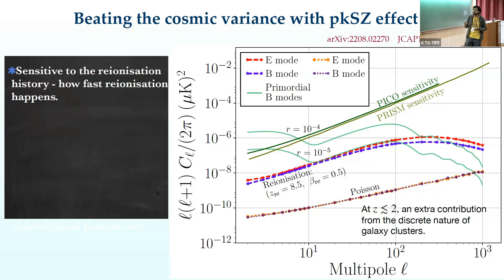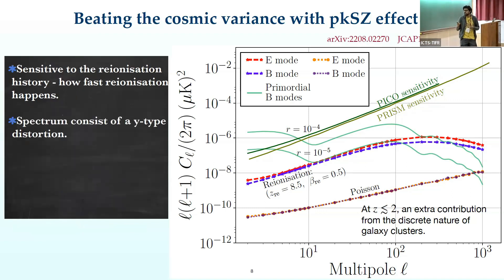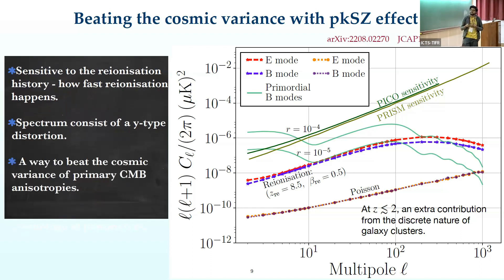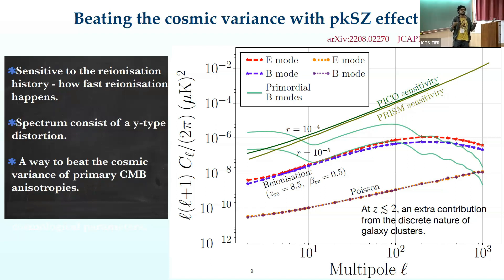A few key points: this power spectrum is sensitive to the reionization history, and in particular how fast reionization happens. It has a y-type distortion, which means it can be differentiated from other primary signals such as the CMB primordial B-mode signals, which have a blackbody spectrum. It is also distinguishable from other y-type distorted signals such as the thermal Sunyaev–Zeldovich effect because this signal is polarized. If future instruments reach good enough sensitivity, it may be possible to detect it.